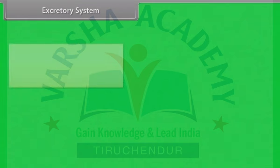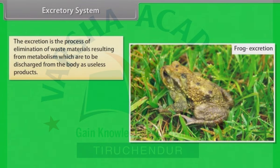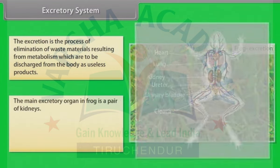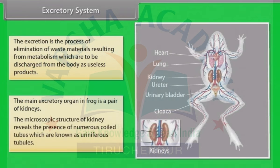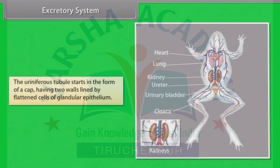Excretory system: Excretion is the process of elimination of waste materials resulting from metabolism, which are discharged from the body as useless products. The main excretory organ in frog is a pair of kidneys. The microscopic structure of kidney reveals numerous coiled tubes known as uriniferous tubules, which start in the form of a cap having two walls lined by flattened cells of granular epithelium.